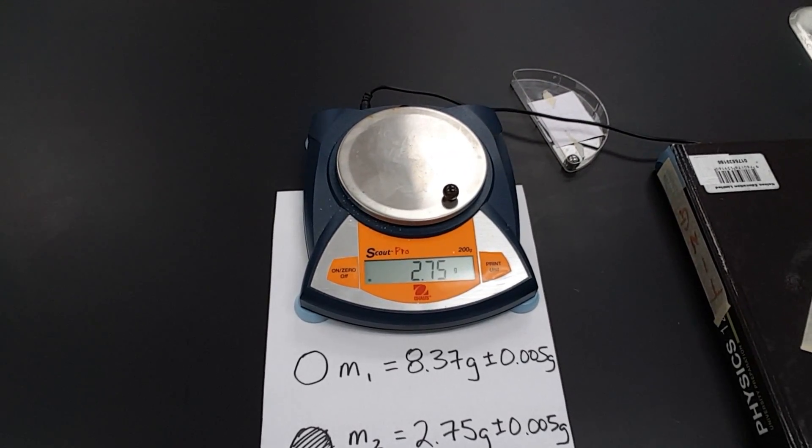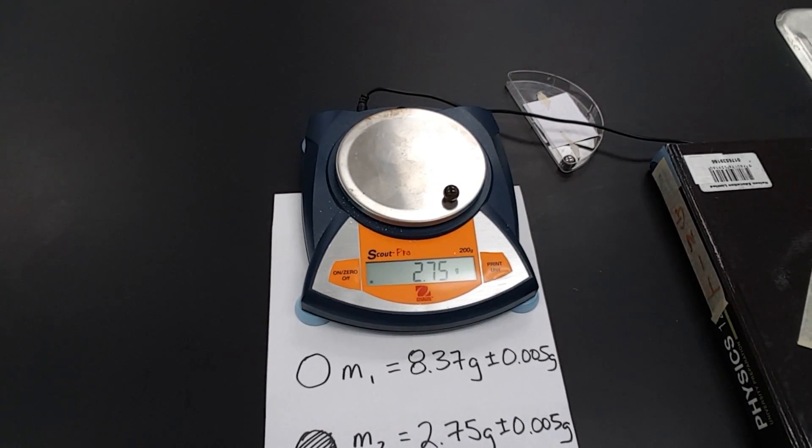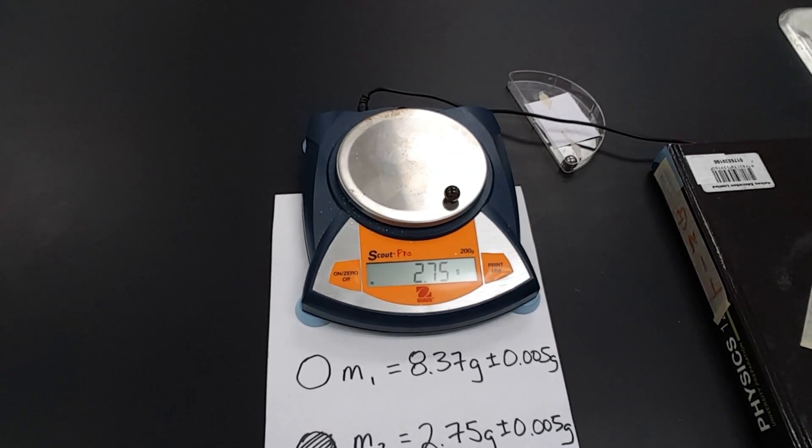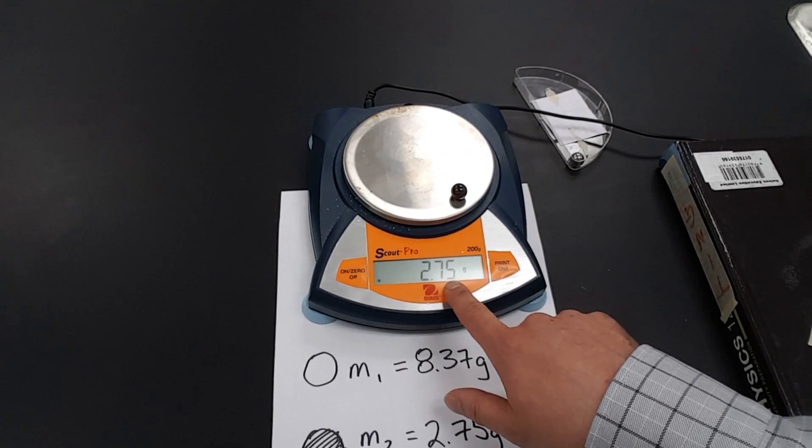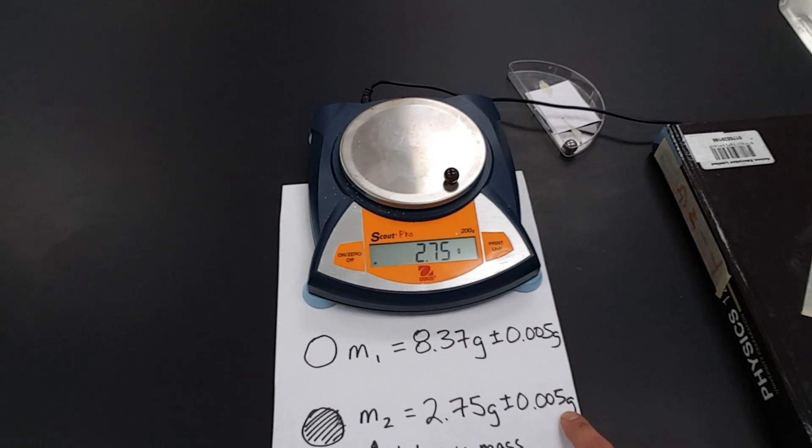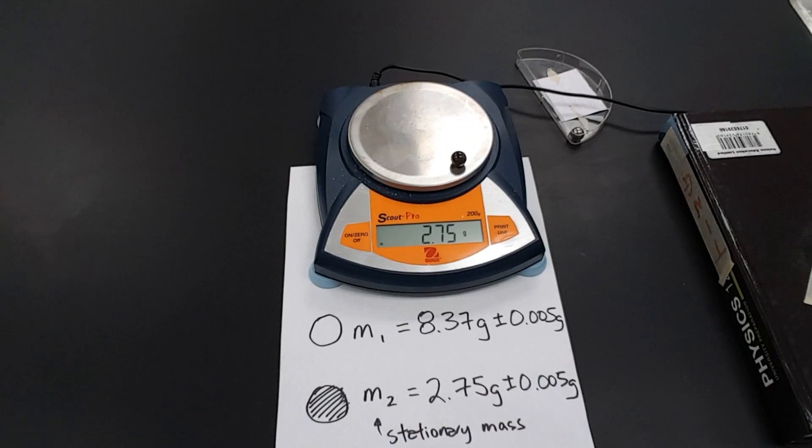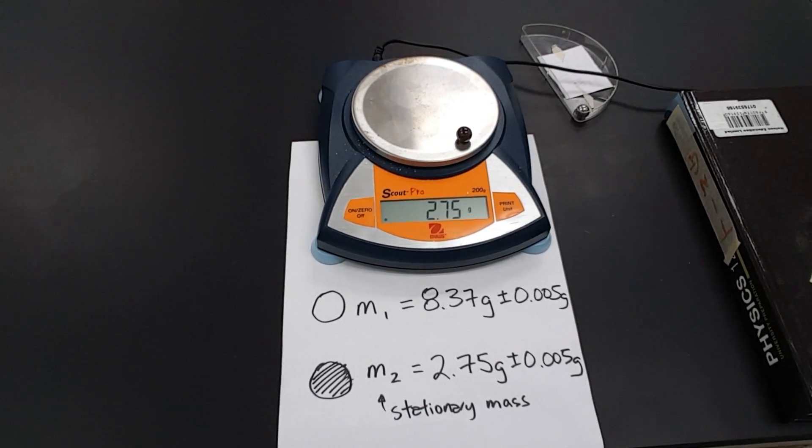The uncertainty for any given digital scale is going to be half of the least significant digit. So you'll see that this can estimate to the nearest hundredth of a gram. So the uncertainty will be half of a hundredth or five one thousandths of a gram. That's how you determine the uncertainty in any digital scale.